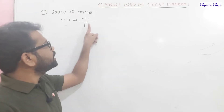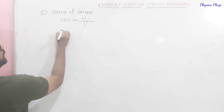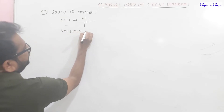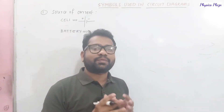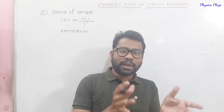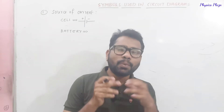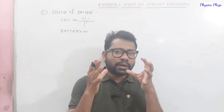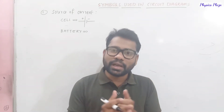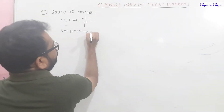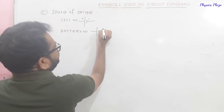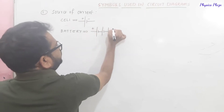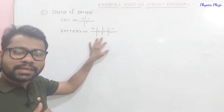A battery is a combination of cells connected in series. All cells are connected back to back, giving a positive terminal at one end and negative at the other, producing a higher current. For AC current, it is represented by a sinusoidal wave symbol, since its magnitude and direction change continuously.